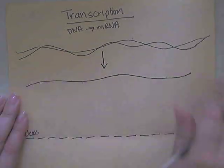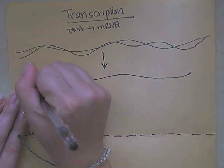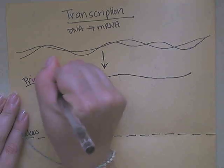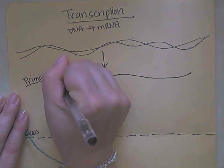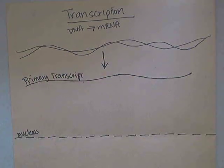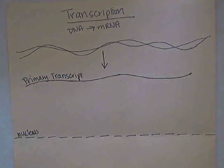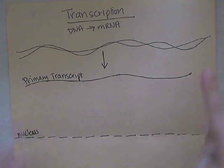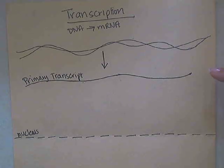Now this first copy that is made is called your primary transcript. This primary transcript is complementary to the DNA, with the exception that in the mRNA it's going to contain the letter U instead of the letter T — so Uracil instead of Thymine.